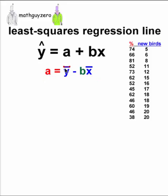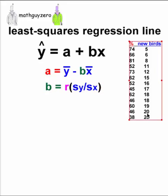The a is the mean of the y variable minus b times the mean of the x variable. And then we have a formula to find out what b is. b is the correlation times the standard deviation from the y's divided by the standard deviation of the x.